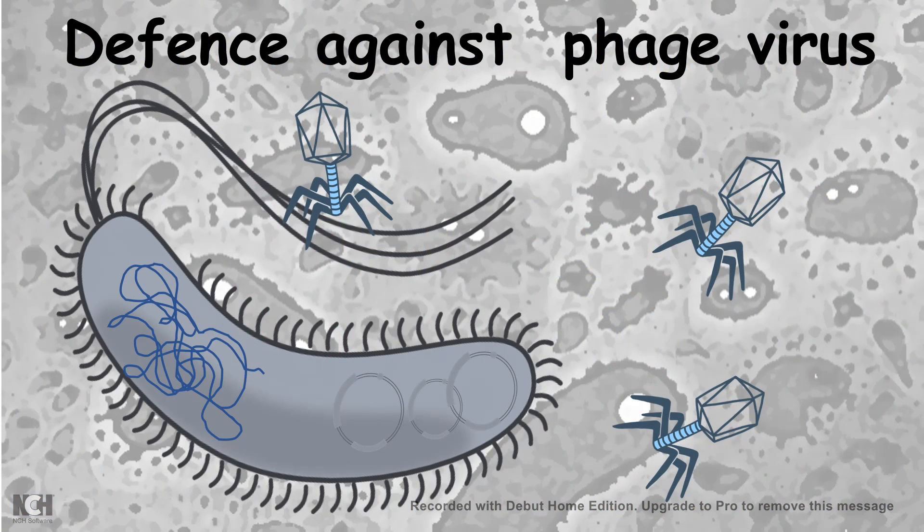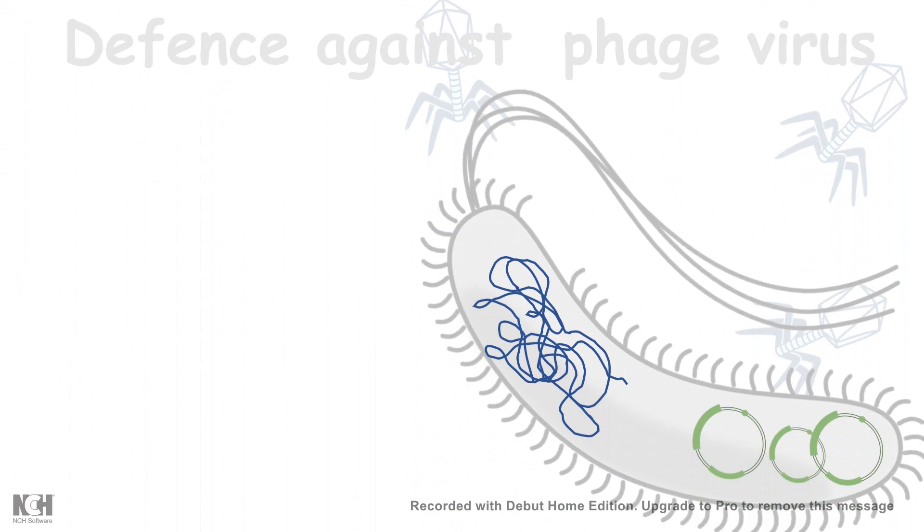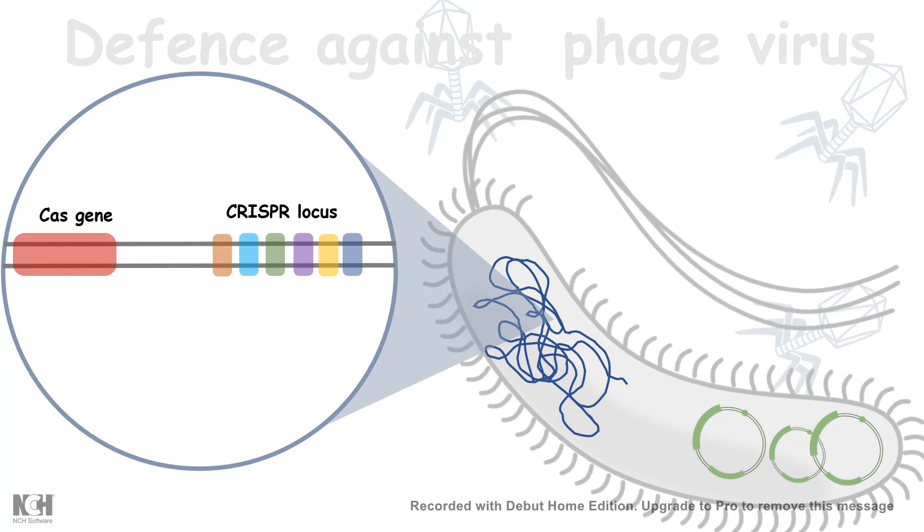But CRISPR can be understood as a defense mechanism against viruses that E. coli use against phage viruses. The phage viruses are the key enemies of E. coli which infect them and kill them. So bacteria have developed a defense mechanism which is embedded in their genome in terms of a DNA sequence CRISPR locus and a Cas gene which is producing a protein Cas9.